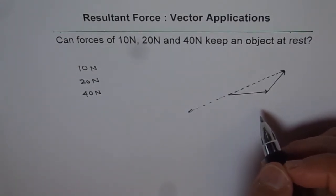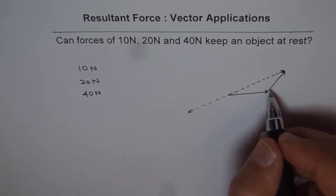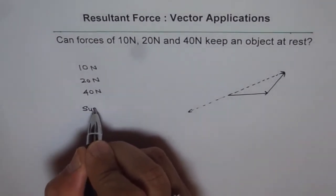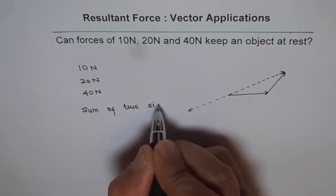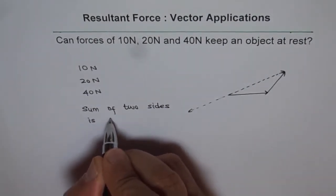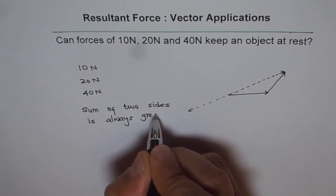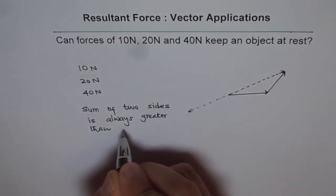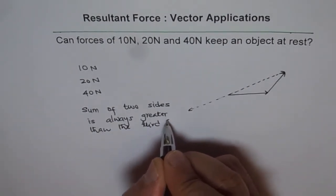Now a triangle has a special property and that is sum of two sides is always greater than the third. So the property of a triangle is sum of two sides is always greater than the third side.